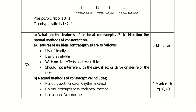Question 30: what are the features of an ideal contraceptive and what are the natural methods of contraception? An ideal contraceptive should be user-friendly, easily available, have no side effects, be reversible on stopping use, and should not interfere with the sexual drive of the user. Natural methods include periodic abstinence or rhythm method, coitus interruptus or withdrawal method, and lactational amenorrhea.